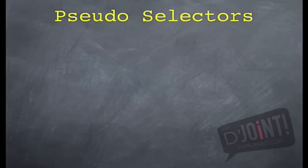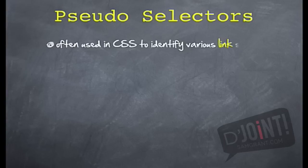Now, to move on to the next one, it's called a pseudo-selector. Now, pseudo-selectors are basically used whenever you want to identify aspects of like a link.